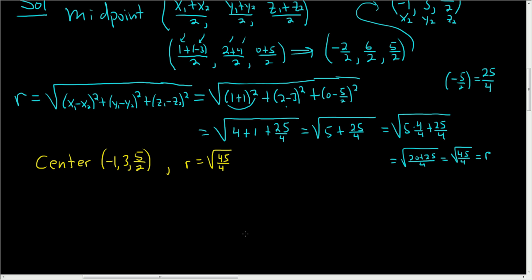And so the formula for a sphere centered at x0, y0, z0 is as follows: x minus x0 squared plus y minus y0 squared plus z minus z0 squared, and this is equal to r squared.